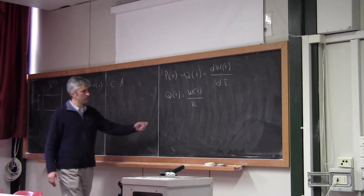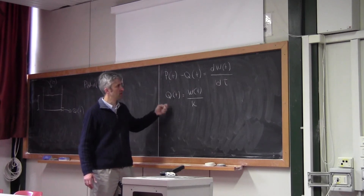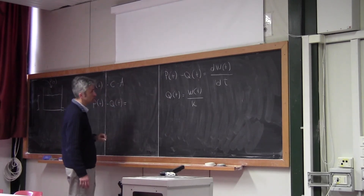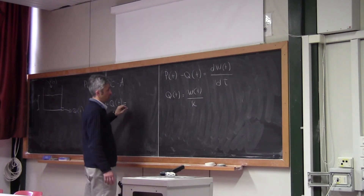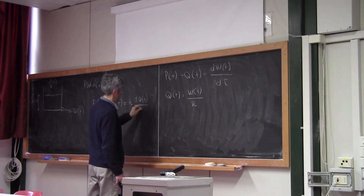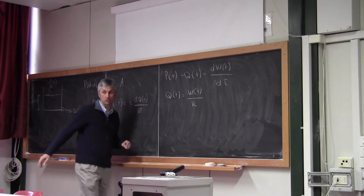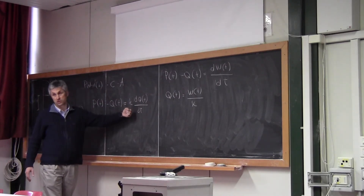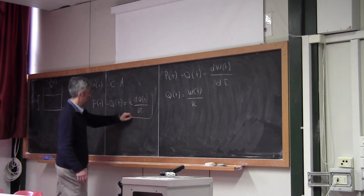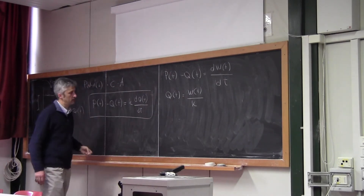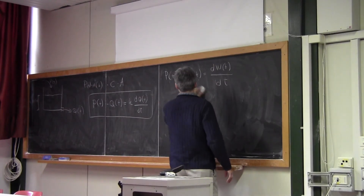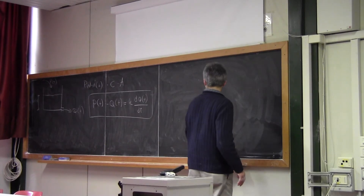Now it is possible to substitute this relationship into the mass balance equation. We can write P(t) minus Q(t) equals k times dQ/dt, because since S = k·Q and k is constant, we can bring k out of the derivative. We can now write the equation this way, and since we have just one unknown, we can integrate it by separating variables.